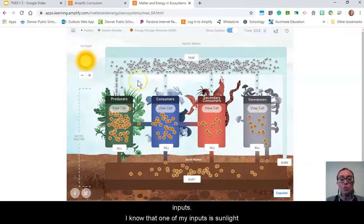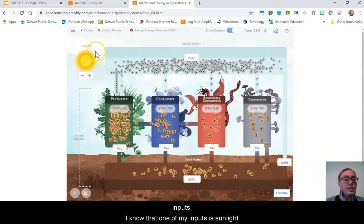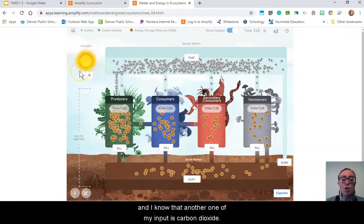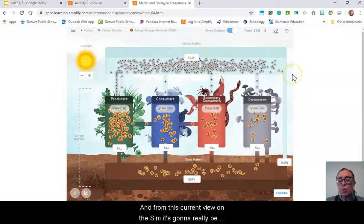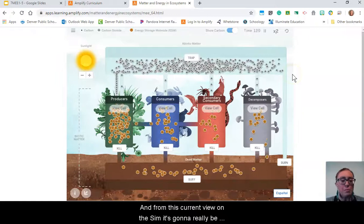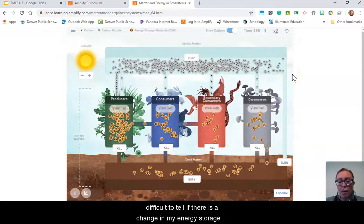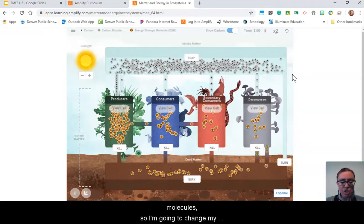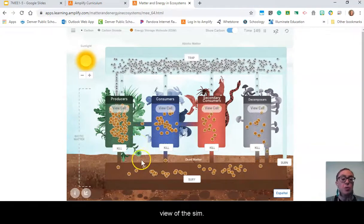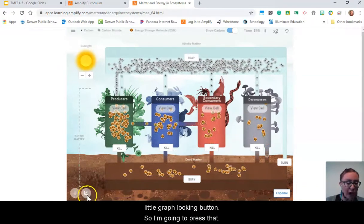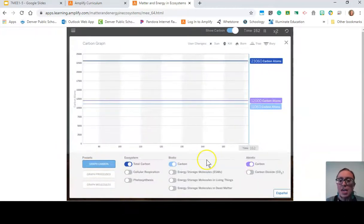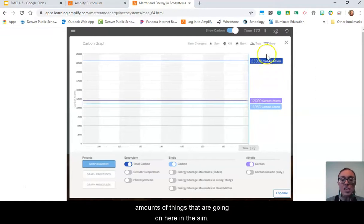I know that one of my inputs is sunlight. From this current view on the sim, it's going to be difficult to tell if there's a change in my energy storage molecules, so I'm going to change my view. If you haven't noticed down here, there's this little graph button. When I press that, I can see actual data for the amounts of things going on in the sim.